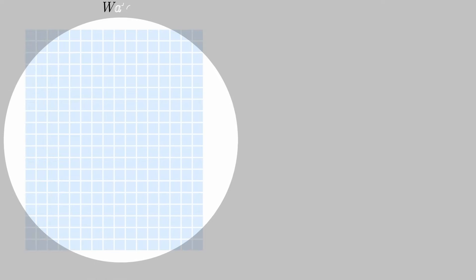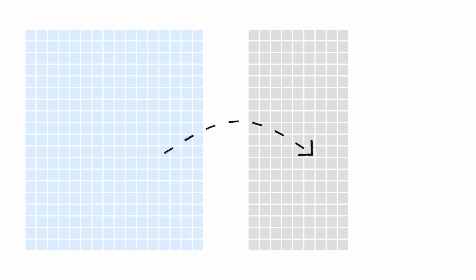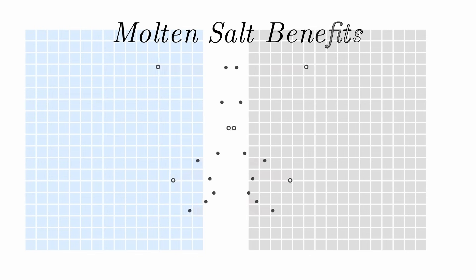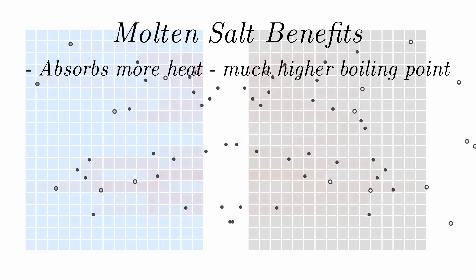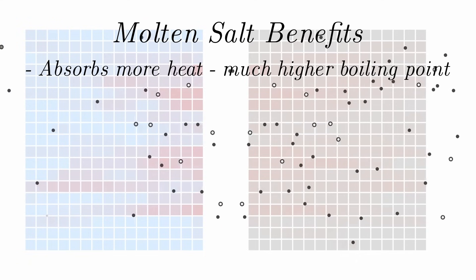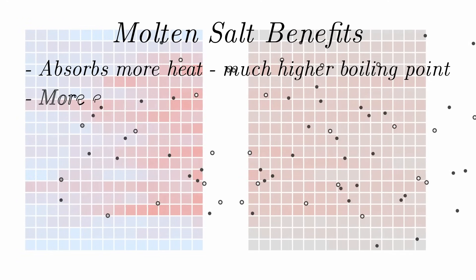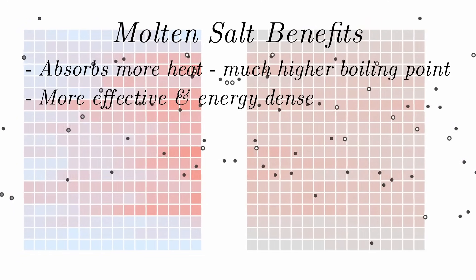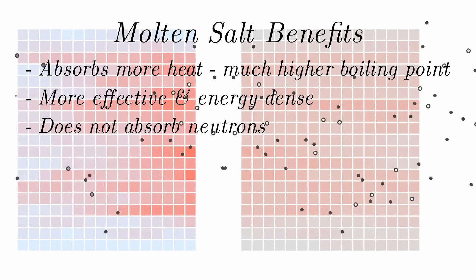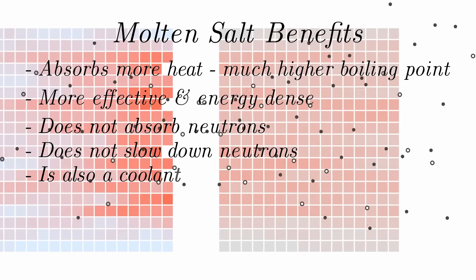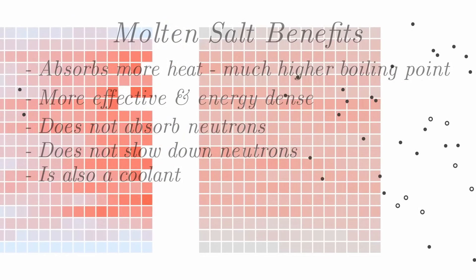The first step to convert this into a molten salt reactor is to replace the coolant with salt — typically chloride or fluoride based salts. I'll depict the salt with grey instead of the blue water color. Why do we want to do this? Salt can absorb much more heat without evaporating, meaning we can build nuclear reactors much cheaper without the expensive high-pressure systems used in conventional light water reactors. Salt is also more effective than water and more energy dense. Importantly, salt does not absorb or slow down neutrons — it does not moderate the neutrons — and it still moves heat into the power-generating turbine.